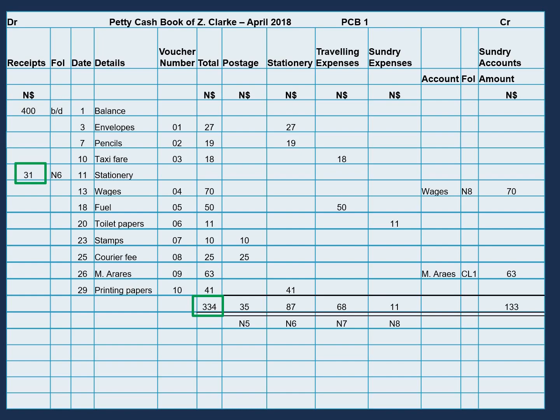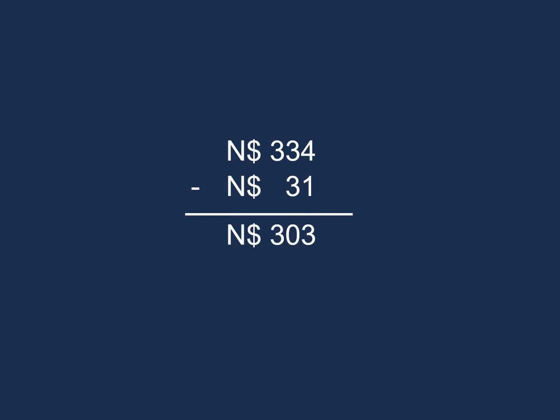So let's go ahead and do that. $334 less our $31 will give us $303. And this $303 is our imprest amount.